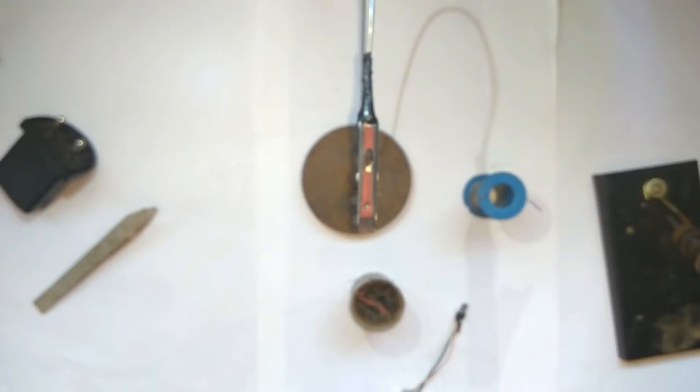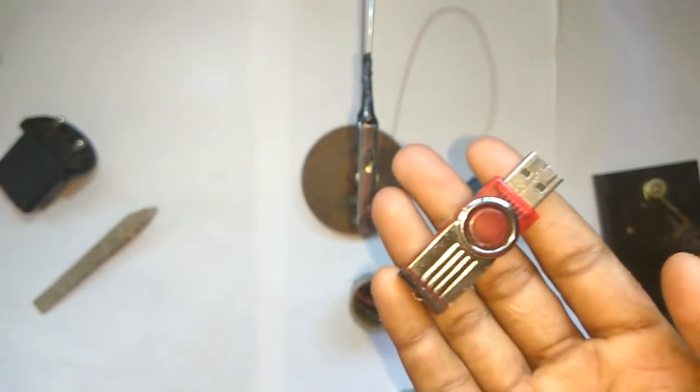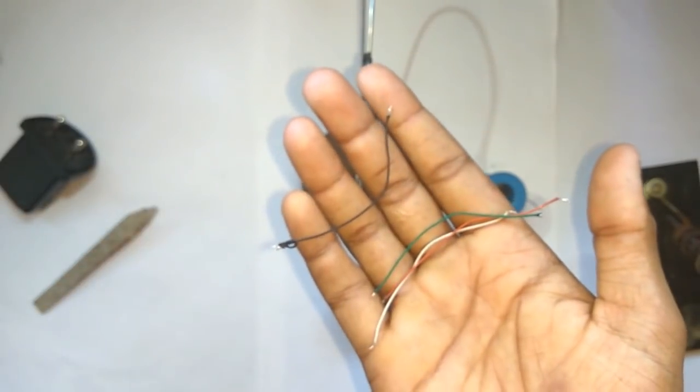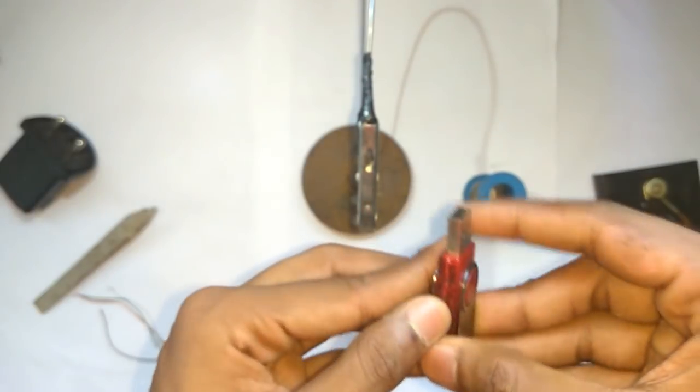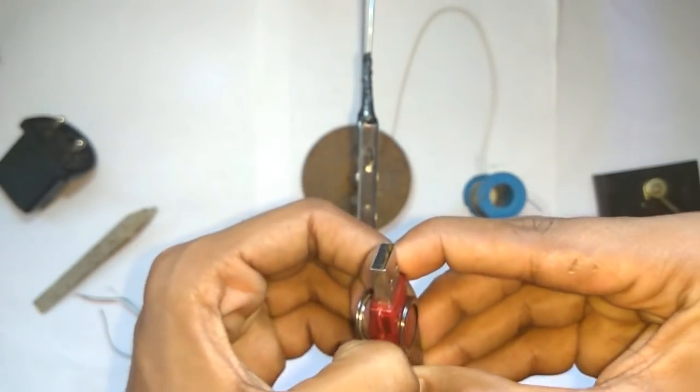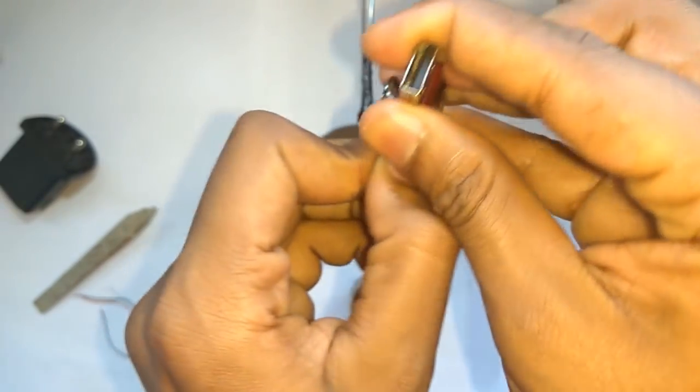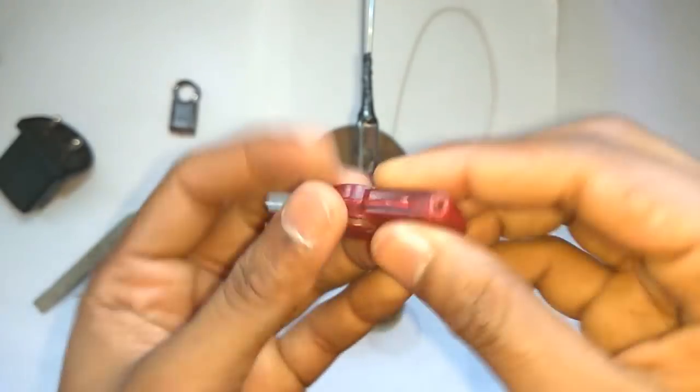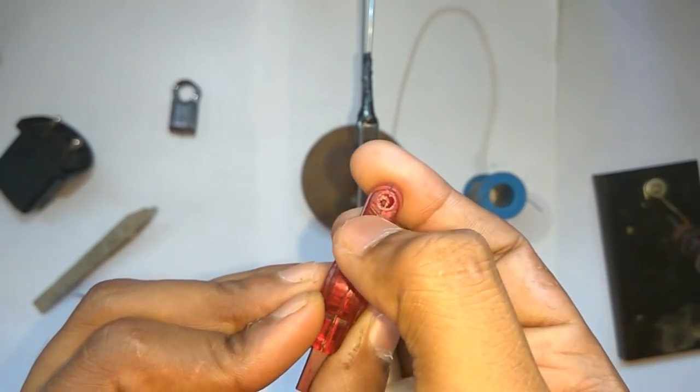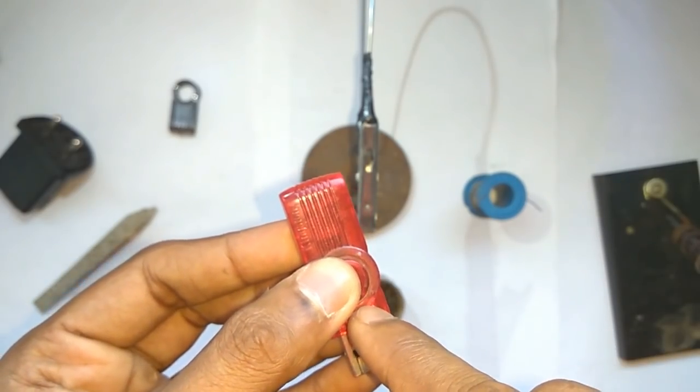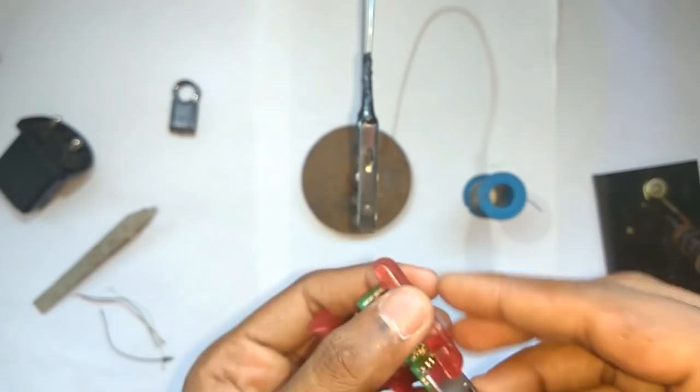So now to make a OTG pen drive, we need a pen drive, mini USB thing, four pieces of wire and that's it. So let's open this pen drive. Be careful while opening.